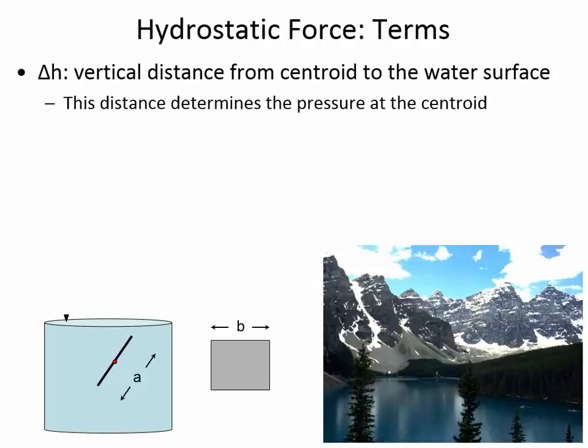The first definition is delta H — the vertical distance from the water surface to the centroid, meaning from the water surface to the center of area. The next definition is pressure at the centroid, sometimes written P-bar. You use the hydrostatic equation to find it: once you've identified delta H from the geometry, multiply by the unit weight of the fluid to find the pressure at the centroid.